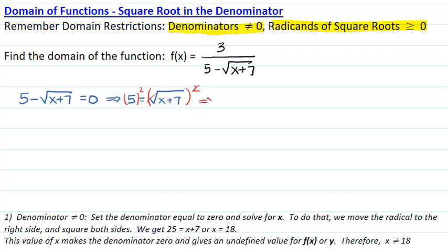We get 25 equals x plus 7, or if we subtract 7 from both sides, 18 equals x. This value of x makes the denominator equal to zero, therefore one of the restrictions is that x must not equal 18.